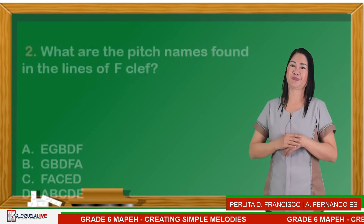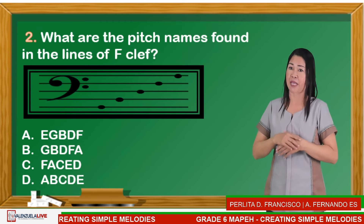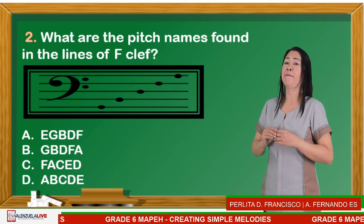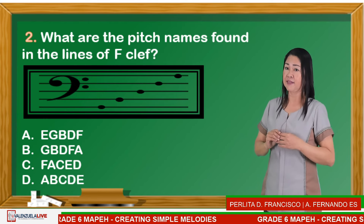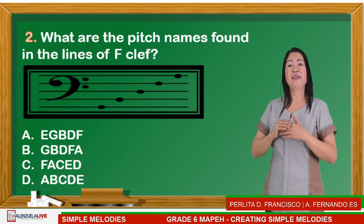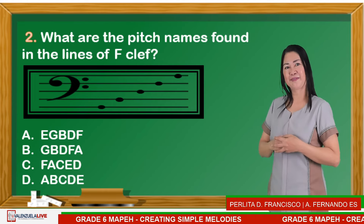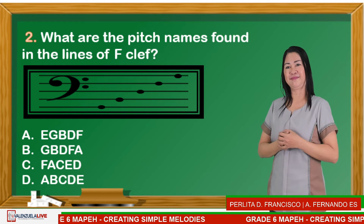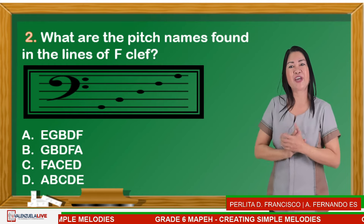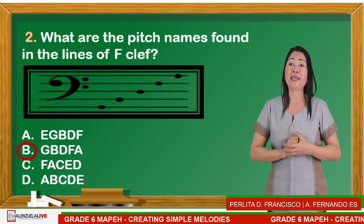Number two: What are the pitch names found in the lines of the G-clef? Is it A — E, G, B, D, F; B — G, B, D, F, A; C — F, A, C, E; or D — A, B, C, D, E? The correct answer is A — E, G, B, D, F.